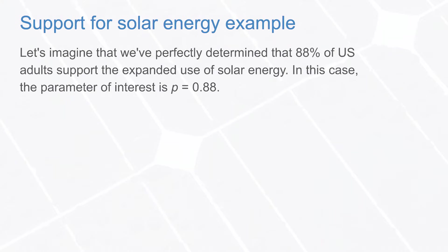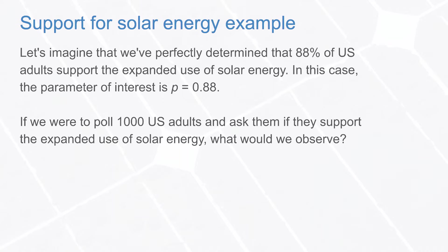Next, we'll consider support for solar energy within the United States. Let's imagine that we've perfectly determined that 88% of U.S. adults support the expanded use of solar energy. In this case, the parameter of interest is p = 0.88, where p represents the population proportion of U.S. adults that support expanding the use of solar energy. If we were to poll 1,000 U.S. adults, what would we observe if the true proportion is 0.88?